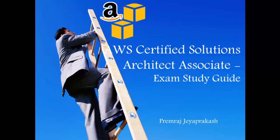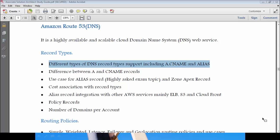Let's move on to Route 53. It is a highly available and scalable domain name service from AWS. The main focus should be on different types of DNS records including A, CNAME, and ALIAS records. The use case for the ALIAS record is the most important of all. Expect a question or two regarding how the ALIAS record is used for apex domains like example.com, and how it integrates with Elastic Load Balancer or CloudFront.